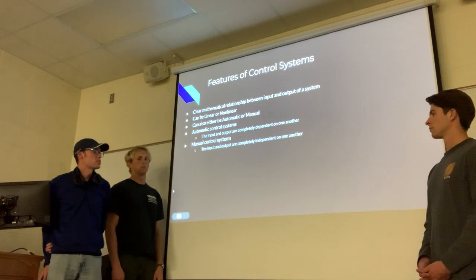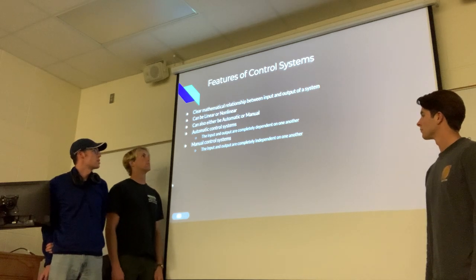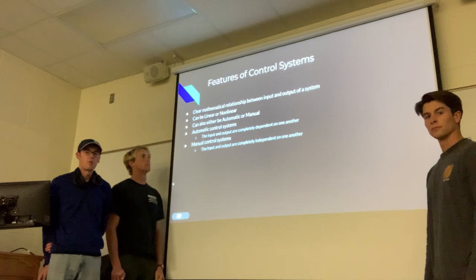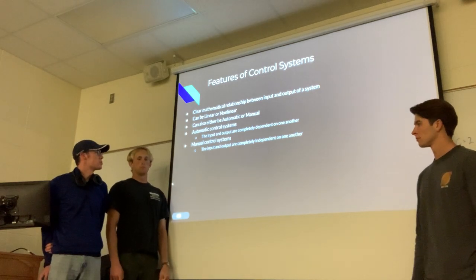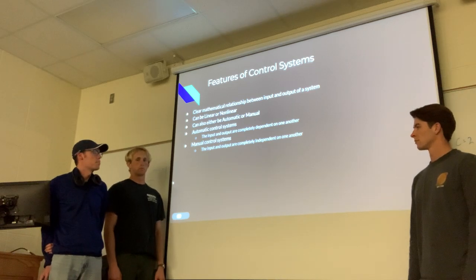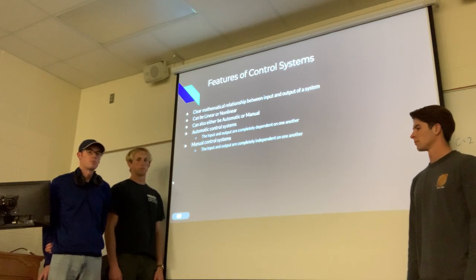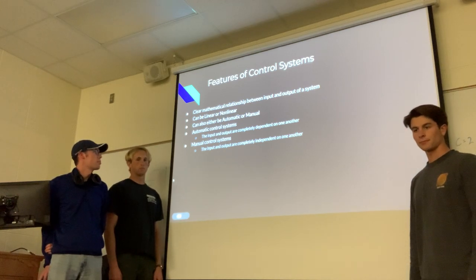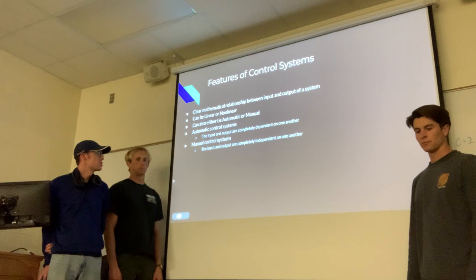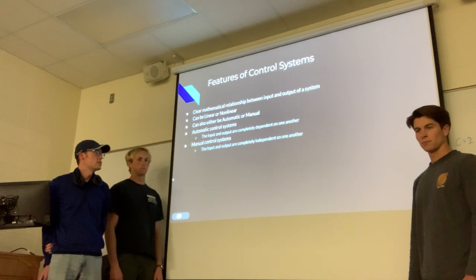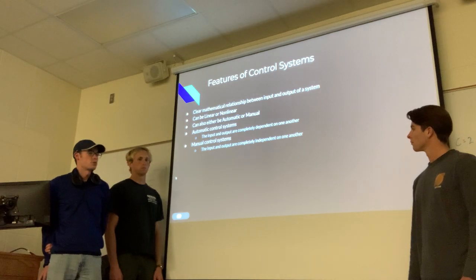Some features of automated control systems include a clear mathematical relationship between the input and output of a system. It can be measured in linear or non-linear proportionality, meaning the input and output work together or they don't work together. It can also be automatic or manual. In automatic control systems, the input and output are completely dependent on one another, and in manual control systems, they're completely independent of one another.